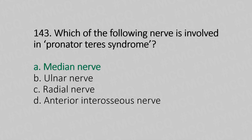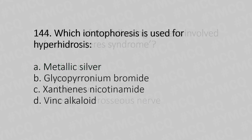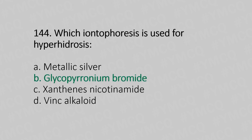Option A: median nerve. Now let's move to question number 144. Which iontophoresis is used for hyperhidrosis? Option A: metallic silver. Option B: glycopyrronium bromide. Option C: zinc and nicotinamide. Option D: vinca alkaloid. And the answer is Option B: glycopyrronium bromide.